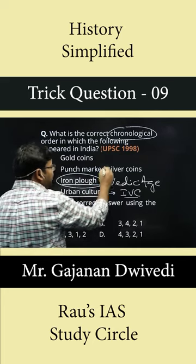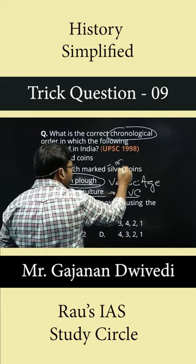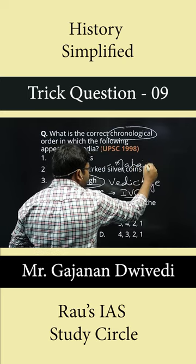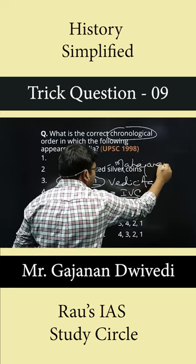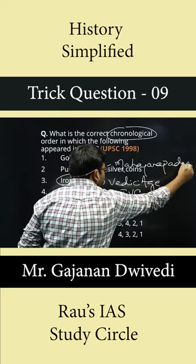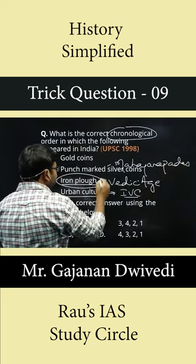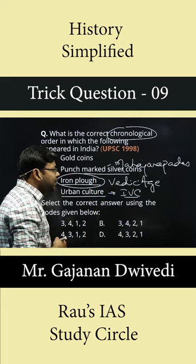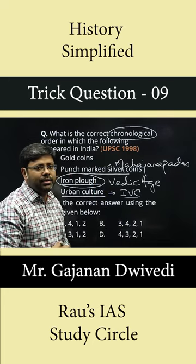Then came the age of Mahajanapadas, and in the age of Mahajanapadas, there was for the first time the introduction of punch-marked silver coins.